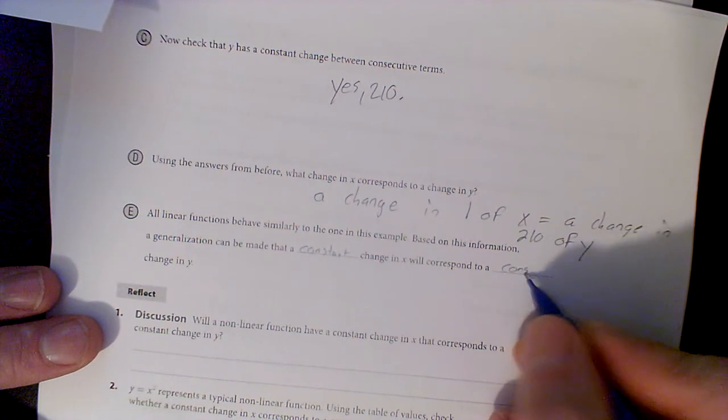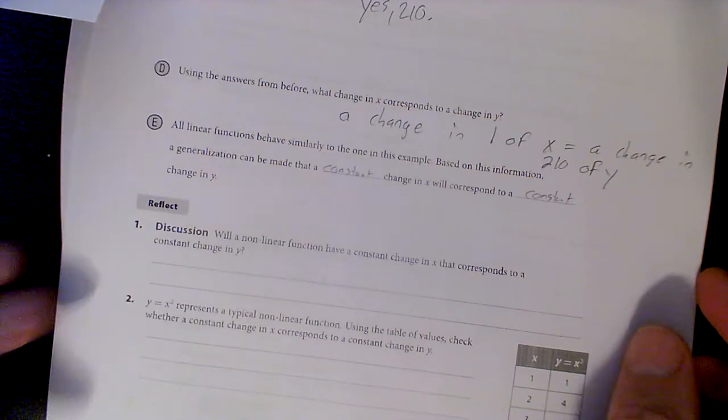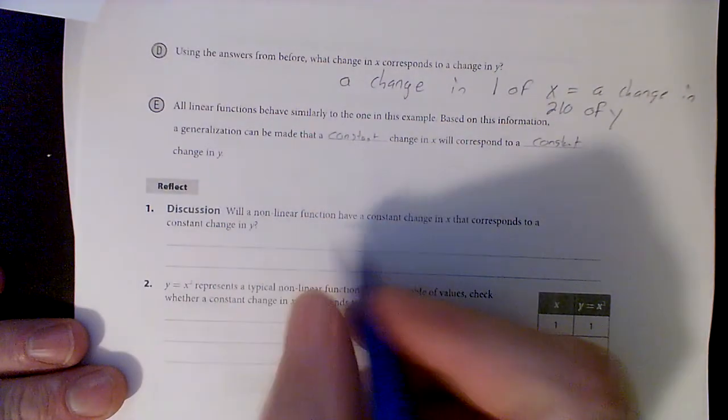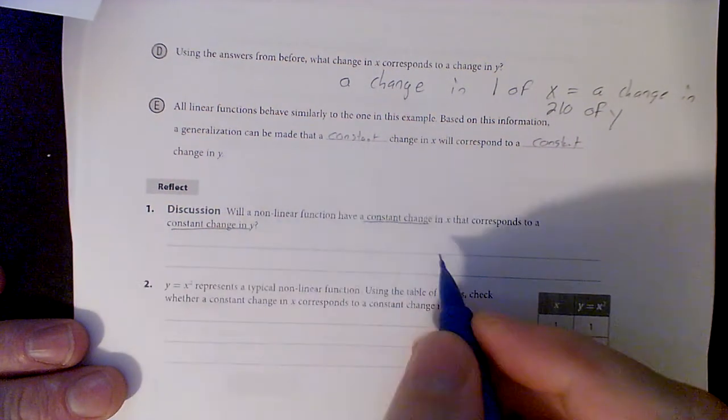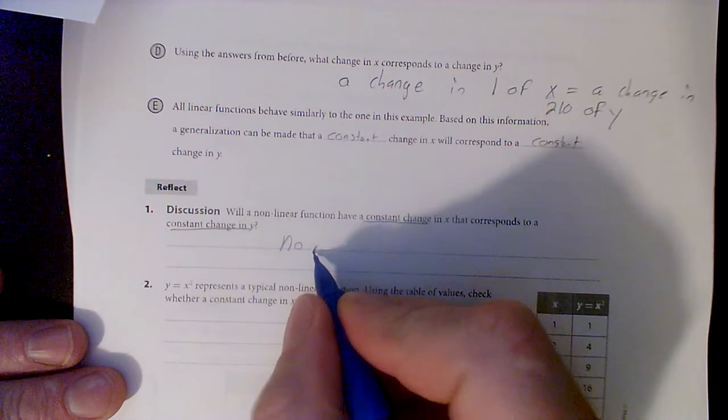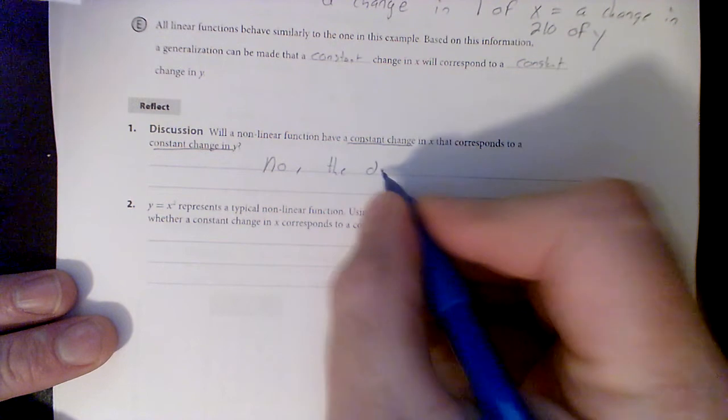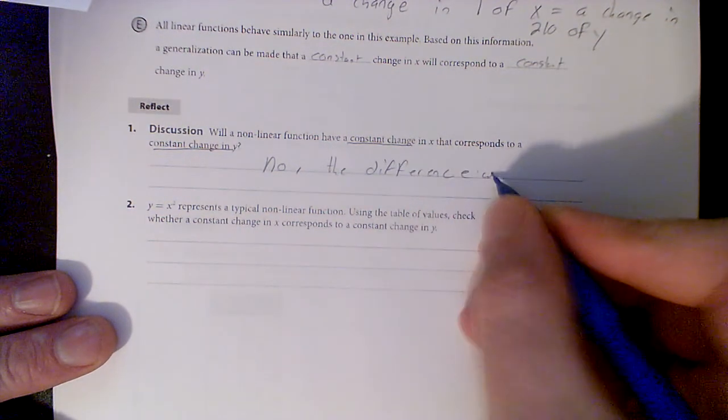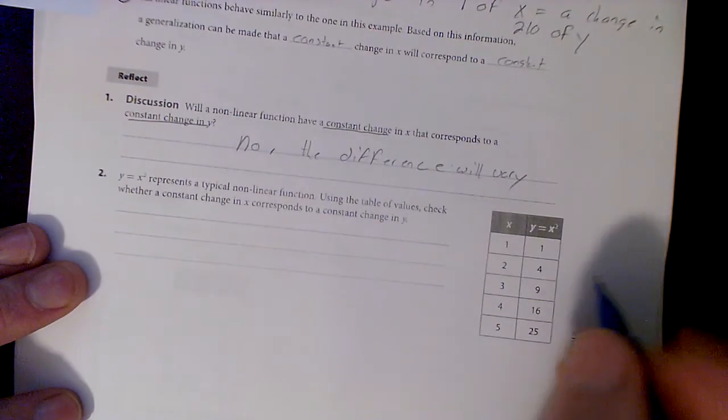I'm curious - would a nonlinear function have a constant change in X that corresponds to a constant change in Y? No. And we're gonna see it down here, right? The difference - let's keep calling it a difference - the difference will vary, and here's one.